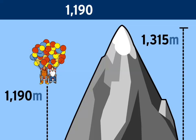We know that 1,190 is less than 1,315. The question is, how many meters do we need to add to our height so that it's greater than the mountain's?